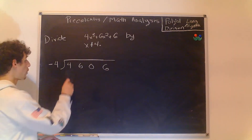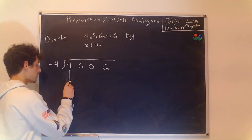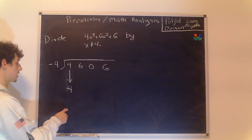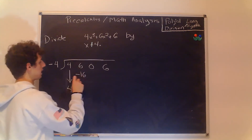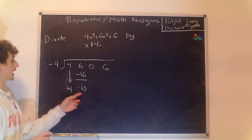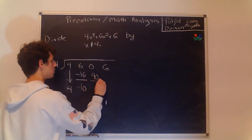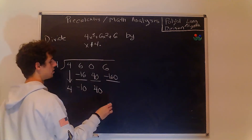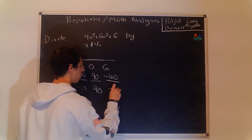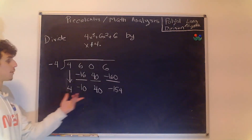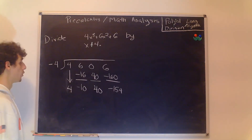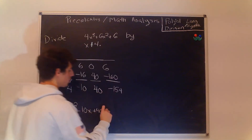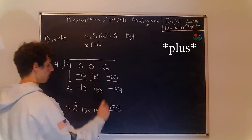We start by bringing the first number down, then multiply it by negative 4 to get negative 16, and add it to the next digit to get negative 10. Then we multiply negative 10 by negative 4 to get 40, and add it to 0, giving us 40. Then 40 times negative 4 is negative 160, and adding it to 6 gives us negative 154. So our resulting polynomial is 4x squared minus 10x plus 40, with a remainder of negative 154 over x minus 4.